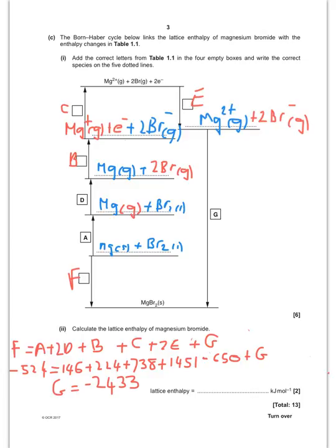So for part C, they want us to complete this Born Haber Cycle. Now I've done this, because it's difficult to keep flipping back and forth between the two pages.